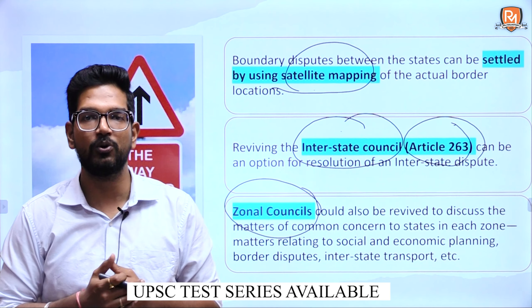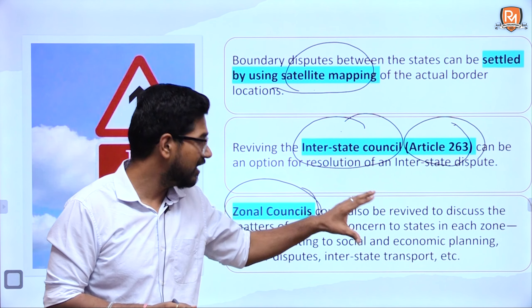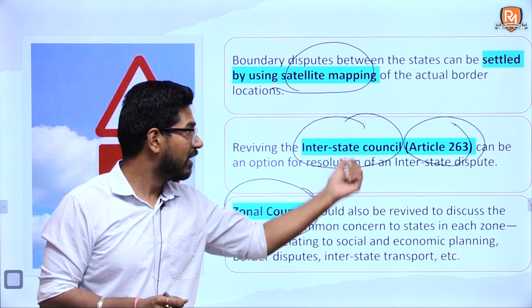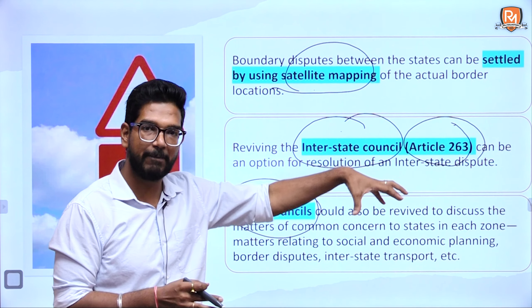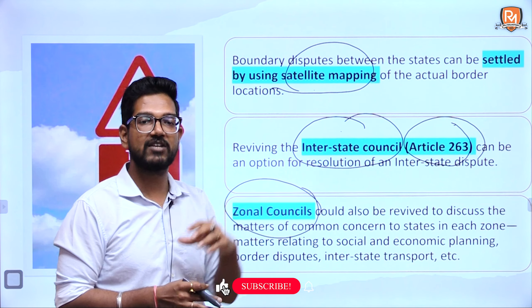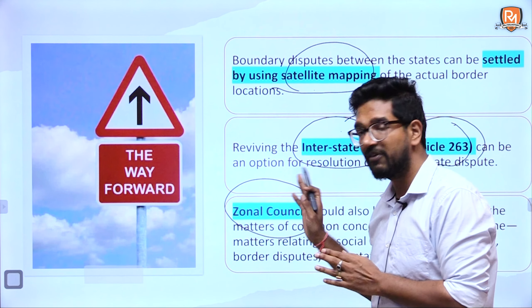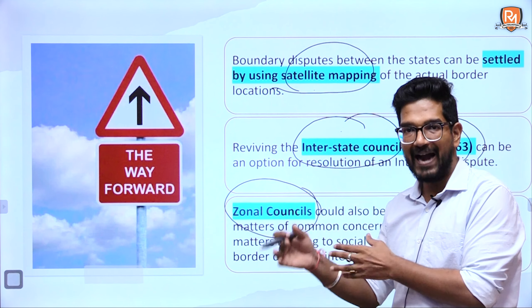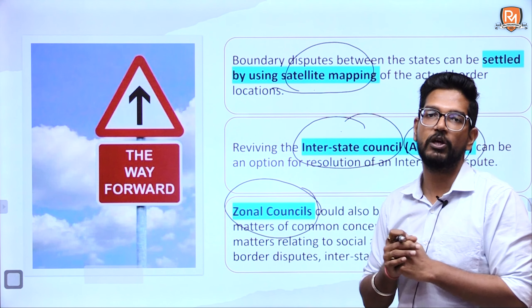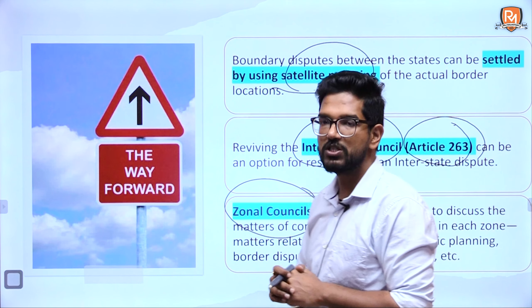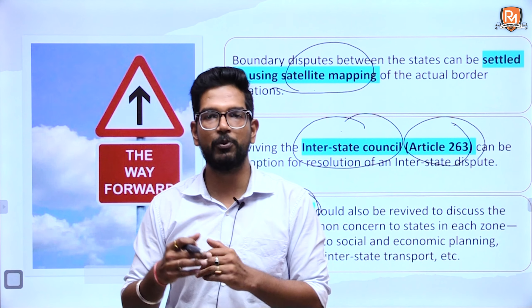Looking at the way forward, the government can settle this dispute by using satellite mapping to ensure proper demarcation of the border area. Under Article 262 of the Indian Constitution, they can revive the Interstate Council, which can help in resolving the dispute between the two states through democratic participation. Another option is the Northeastern Zonal Council, which is a proper platform where the northeastern states themselves can work to solve this problem.